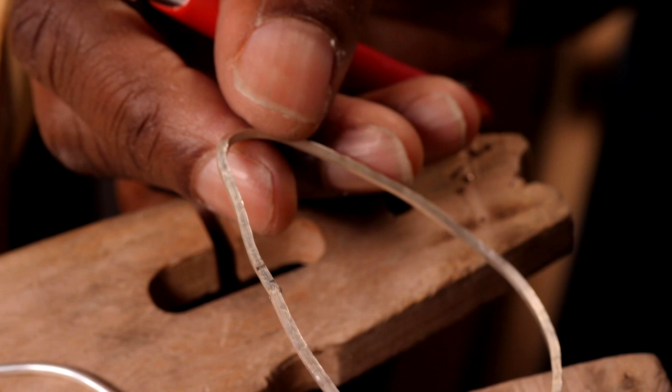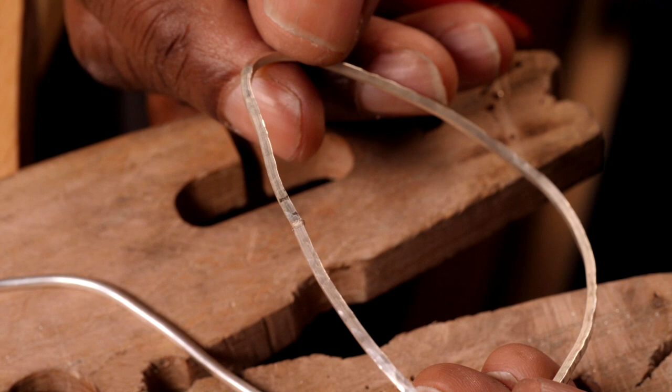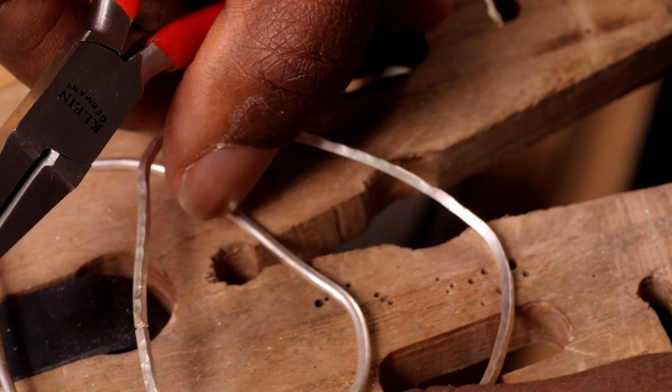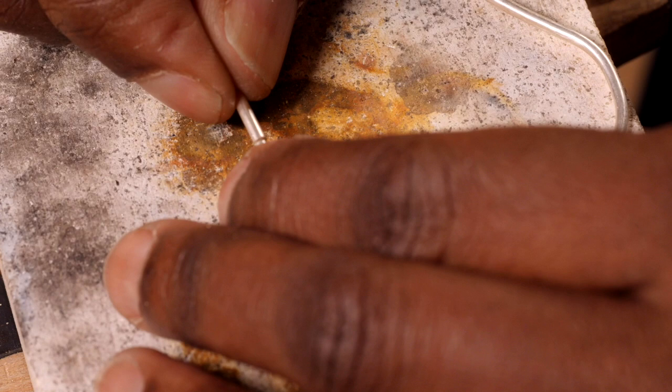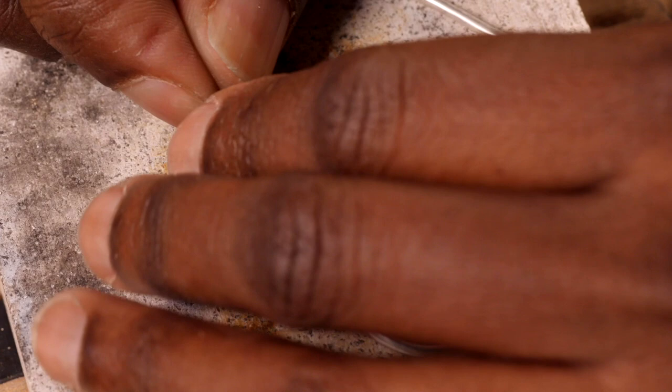So now I need to just solder both solder seams. Then we'll pickle these again, then we'll move on to the brown gold mandrel and round them both up. I'm going to solder each one separately, so one at a time.